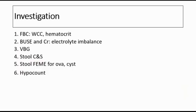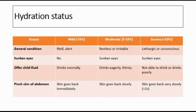The table shows estimated fluid loss: less than 5% for mild dehydration, 5 to 10% for moderate dehydration, and more than 10% for severe dehydration. It is very important to classify the child into the correct group — mild, moderate, or severe — because management will be based on their hydration status classification.